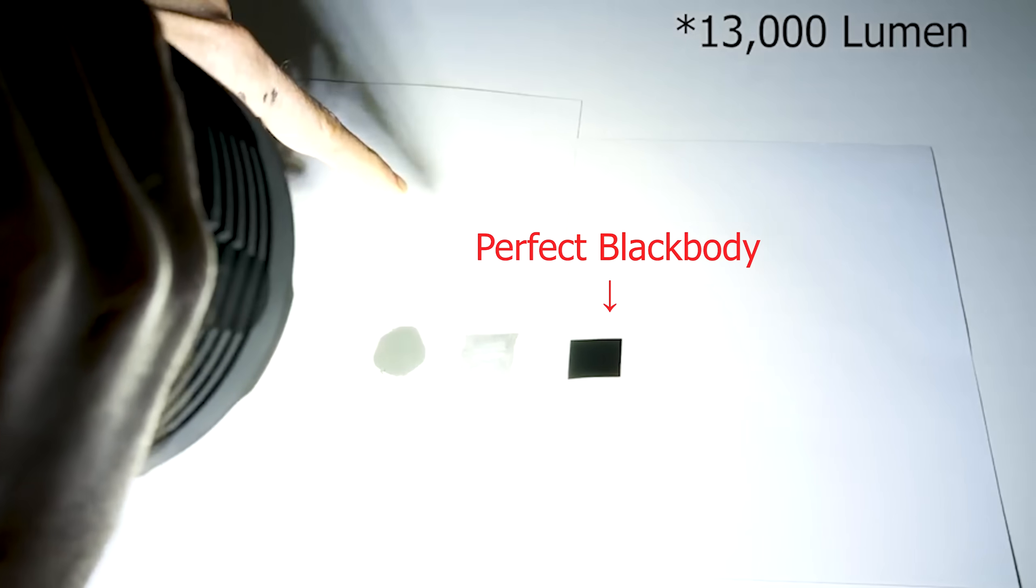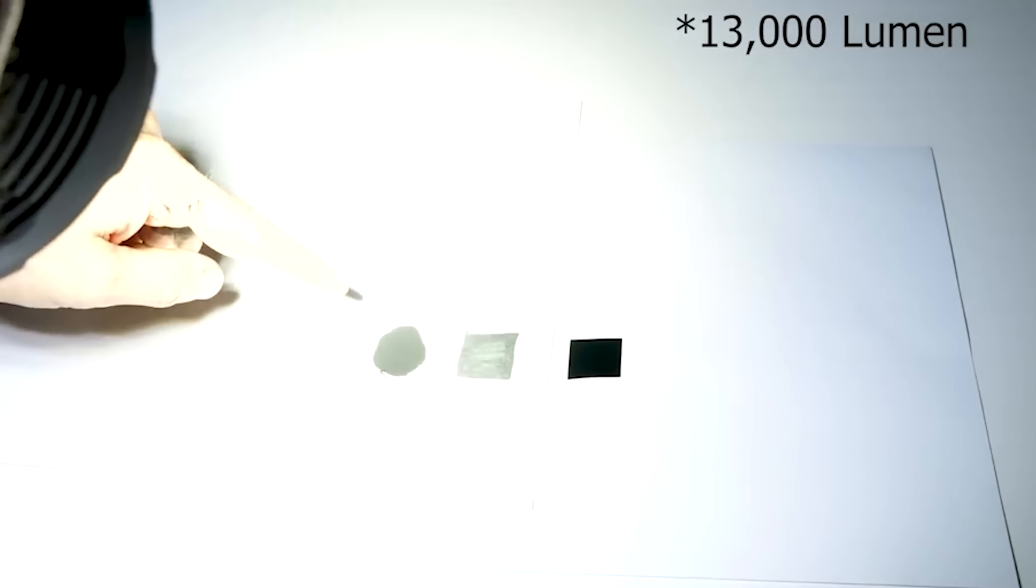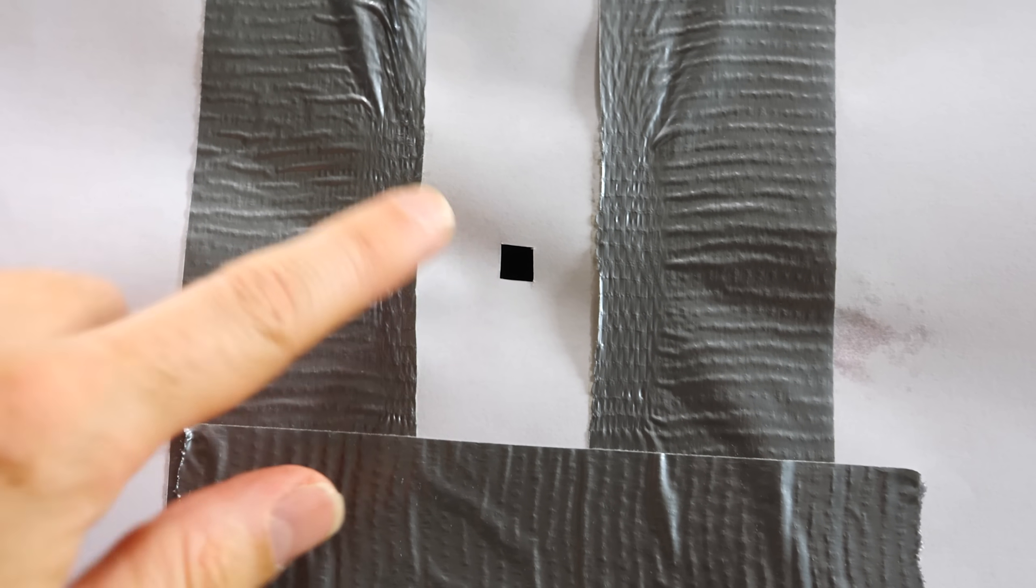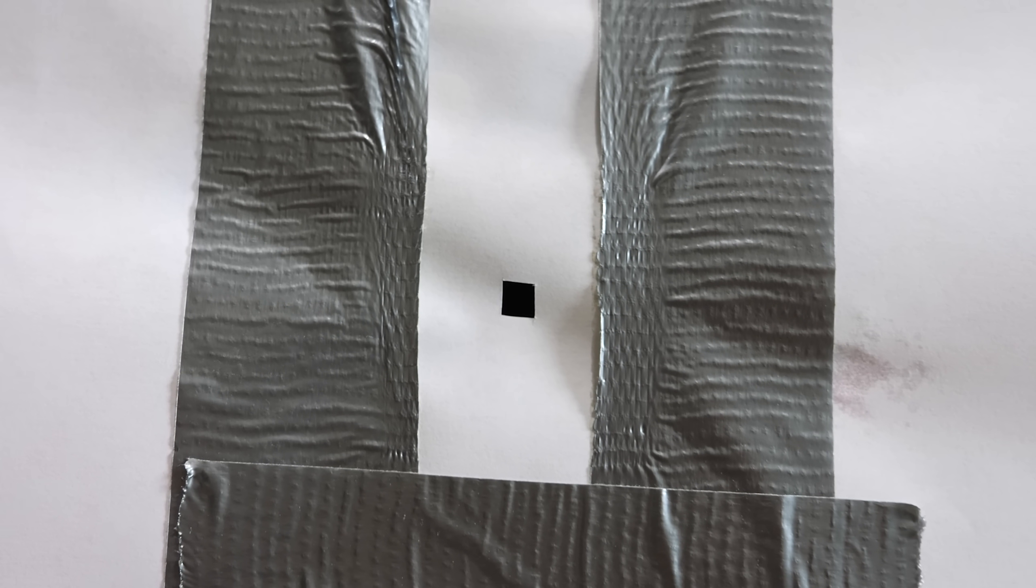So this is my theoretical black body. What this is, it's a body that absorbs 100% of the radiation that hits it. So it absorbs everything. Now the thing with black body radiators like this is that they look black at room temperature. But if you heat them up, they don't actually look black.